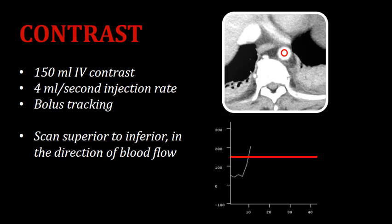We're usually going to use bolus tracking. We'll place the ROI in the abdominal aorta at the level of the diaphragm. When that area of the aorta is brightly enhanced with contrast, that means it's time to start the scan, and we'll follow that bolus of contrast all the way down through the pelvis.